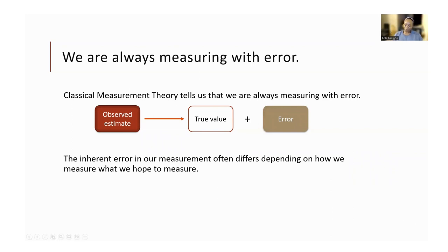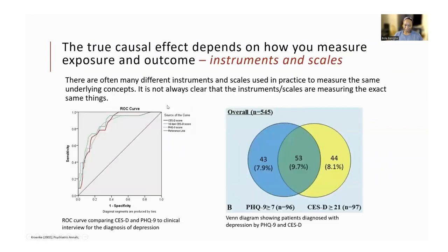What kinds of errors should you have in mind? When thinking about the true causal effect, consider instruments and scales. What we believe about the true causal effect in primary studies depends on what we are measuring and how we're measuring it. Some concepts are defined similarly but measured using different scales and instruments, and that can be a reasonable source of variation. For example, on the left of this slide is a receiver operating characteristic (ROC) curve comparing the sensitivity and false positive rate of three instruments that measure the same construct — depression.